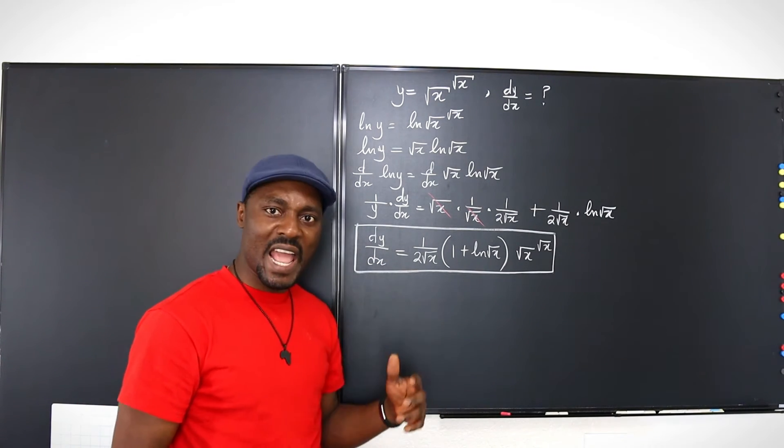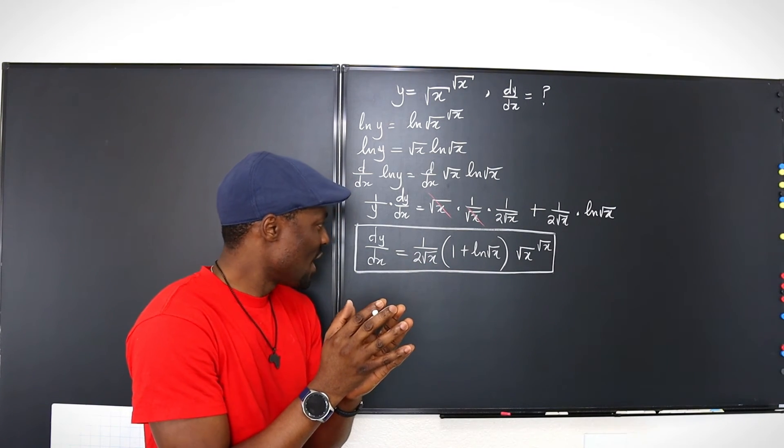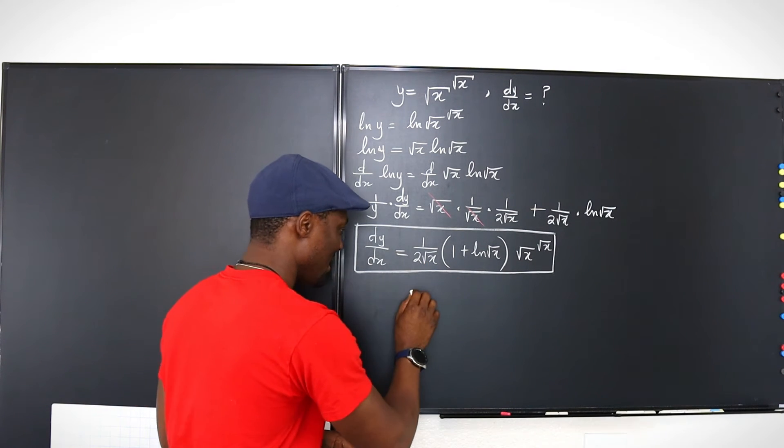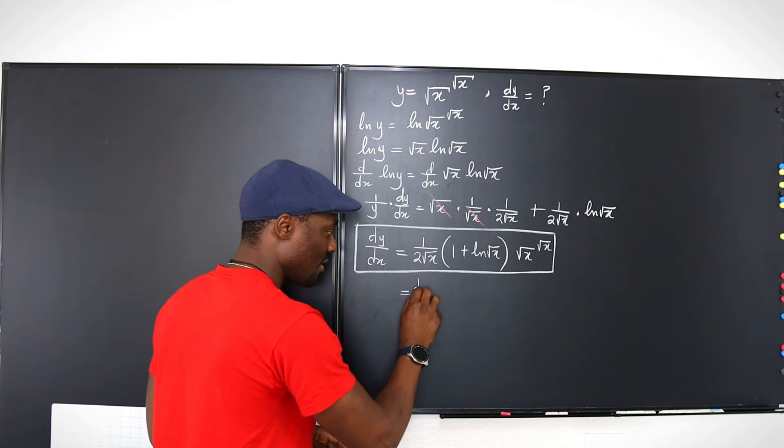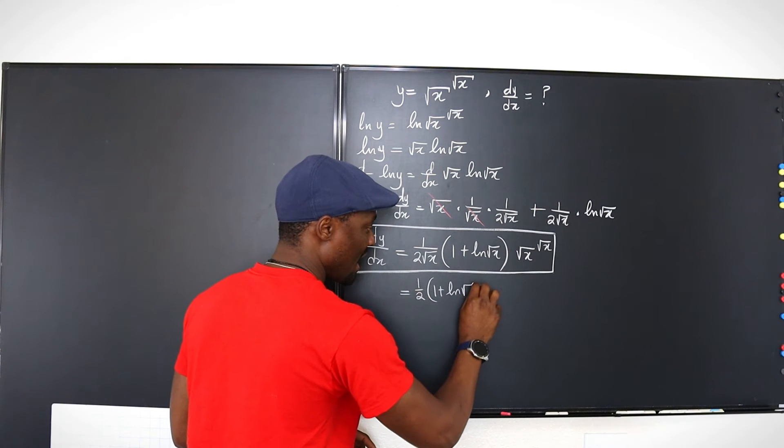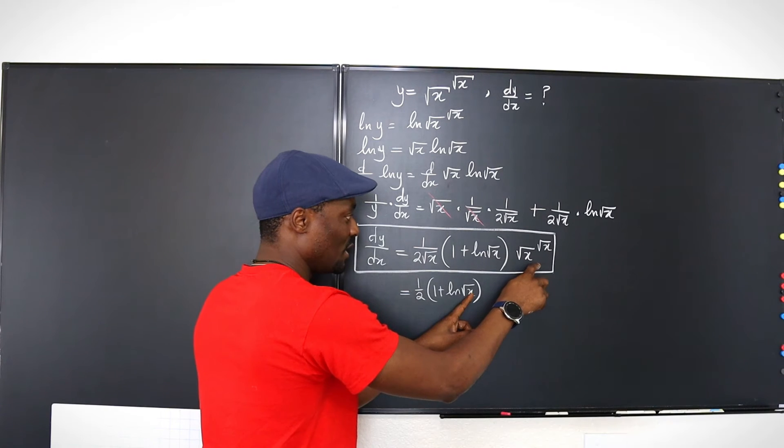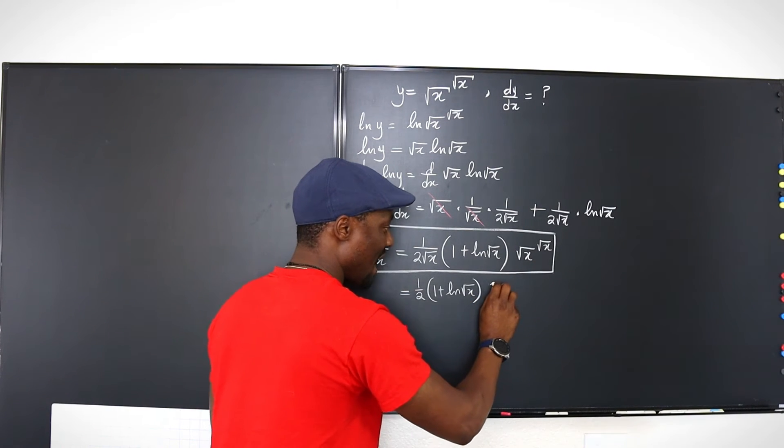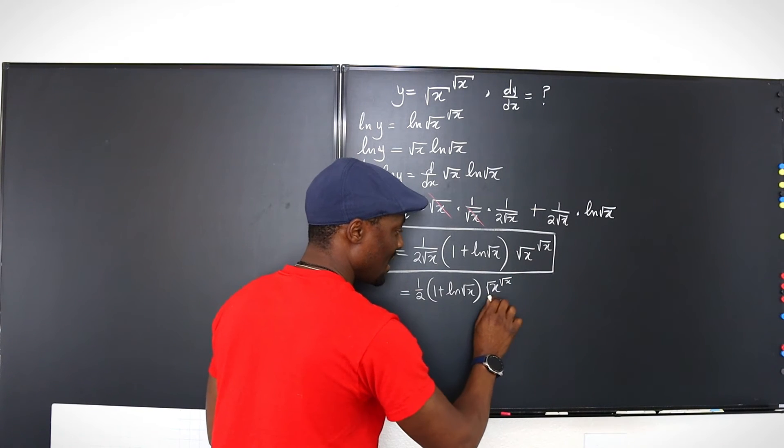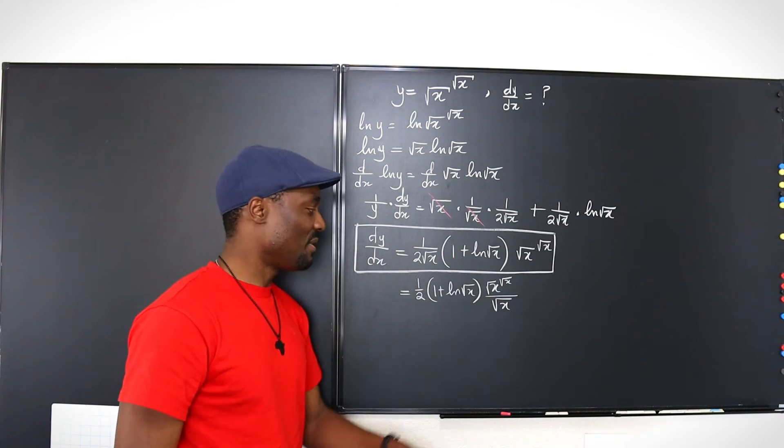But if you want to go on and further simplify, collect like terms, make everything look beautiful. You could actually rewrite this. I'm going to leave the 1 half here. 1 half, 1 plus ln square root of x. And then take this 1 here, use it to go divide this. So I'm going to have square root of x raised to square root of x divided by square root of x. See, this is all exponents. You can simplify this.